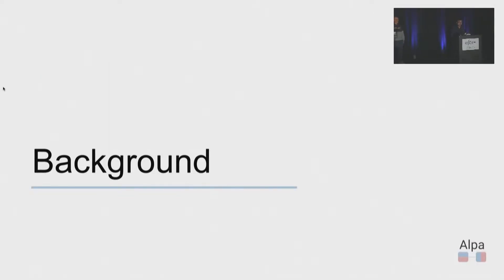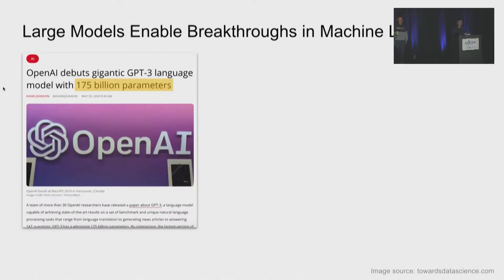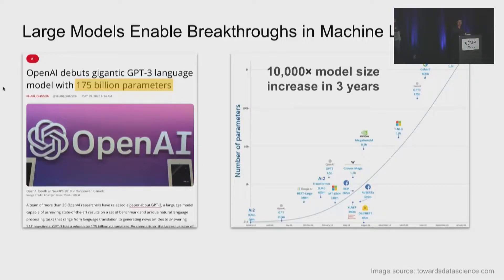Let me begin with some background on large models. A lot of recent advances in deep learning are enabled by large models. For example, two years ago, OpenAI released the famous gigantic GPT-3 model with 175 billion parameters. This model is recognized as one of the most important breakthroughs in machine learning. Today, the benefit of scaling models starting to diminish. People are still trying to train larger and larger models.